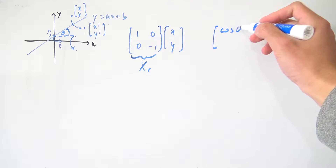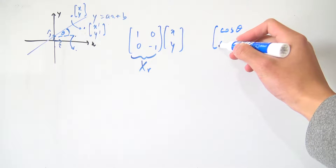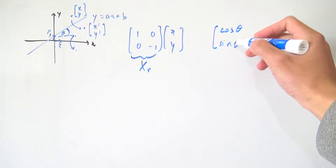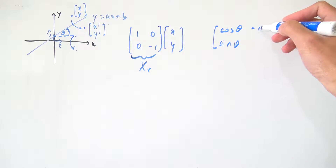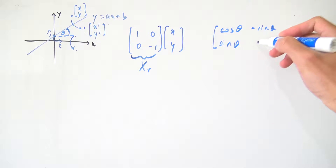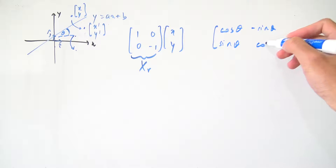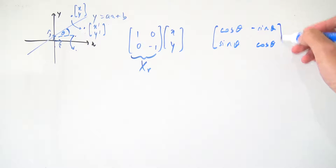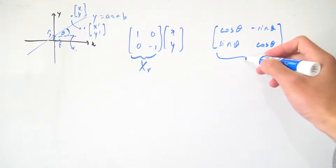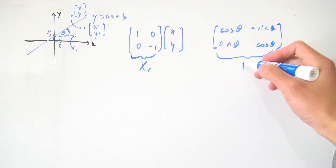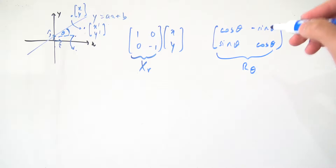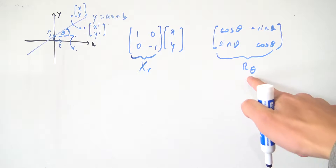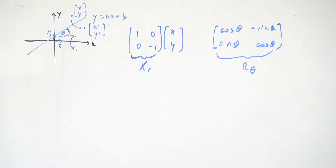The rotation matrix is the matrix with entries cosine theta, minus sine theta in the first column, and sine theta, cosine theta in the second column. I'm going to call this matrix R(θ), a rotation by theta.